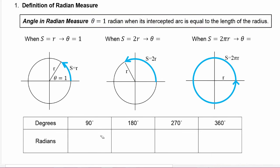So what we just saw is when the arc length is equal to the radius of the circle, then that means θ is equal to one radian.